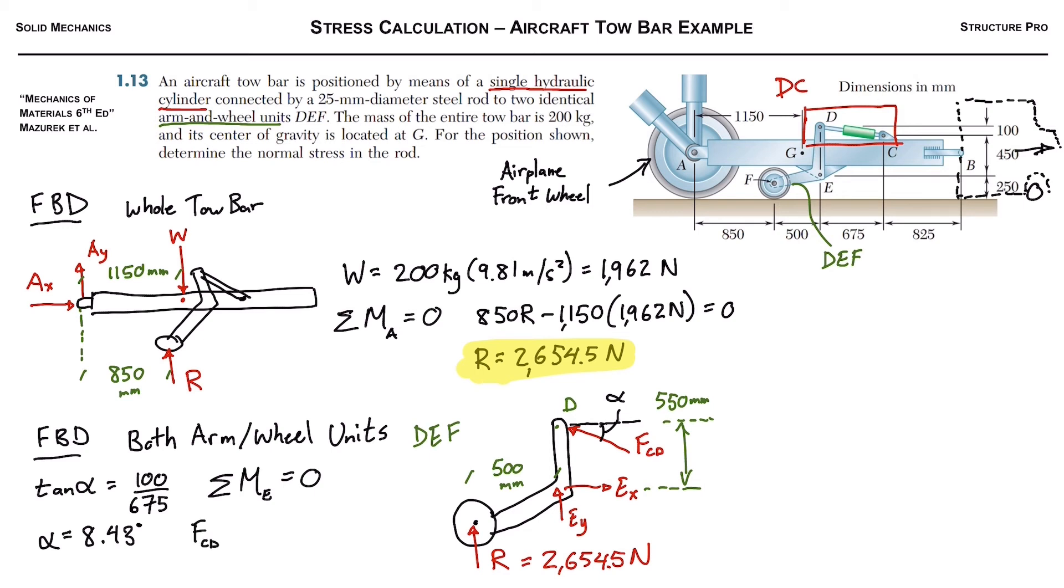So that means we got FCD multiplied by the cosine of this angle we found, and multiply that by the moment arm of 550 millimeters. Then we go for the reaction, we'll just pop it right onto the other side already because we can see from the figure it's opposing.